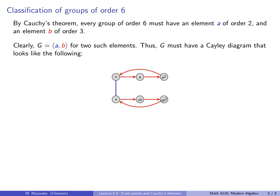So just by knowing there's an element of order 2 and an element of order 3, we know that we have this part of the Cayley diagram. So there's not much left to do. And it is now easy to see that up to isomorphism, there are only two groups of order 6.